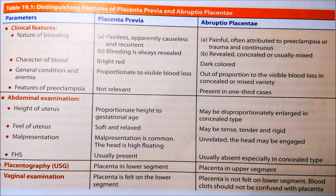Comparing the two conditions: in placenta previa, bleeding is painless, apparently causeless, and recurrent; always revealed; blood is bright red; and anemia is proportionate to the visible blood loss; no pre-eclampsia features. In abruptio placentae, bleeding is painful, associated with pre-eclampsia or trauma, continuous; bleeding may be revealed or concealed; blood is dark colored; and anemia and general condition are out of proportion to visible blood loss in the concealed type; pre-eclampsia features are present in one third of cases.